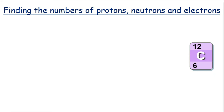Welcome to this video about how to find the numbers of protons, neutrons and electrons. To be able to find these numbers, we need to look at how an element is represented on the periodic table. And here we have the example of carbon.